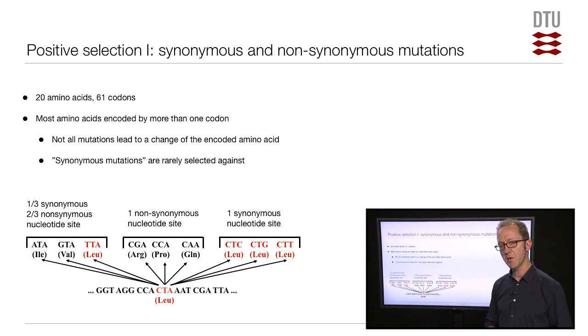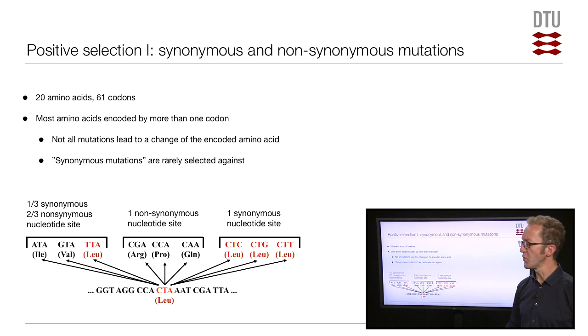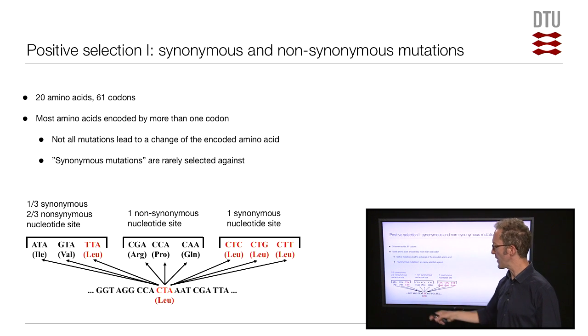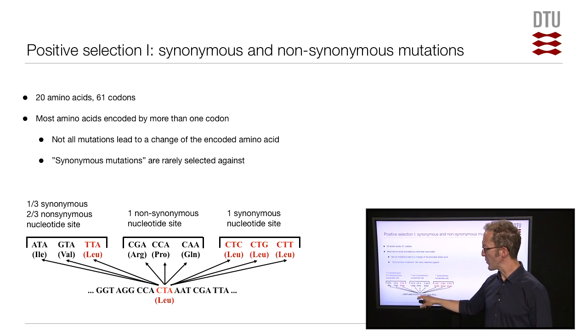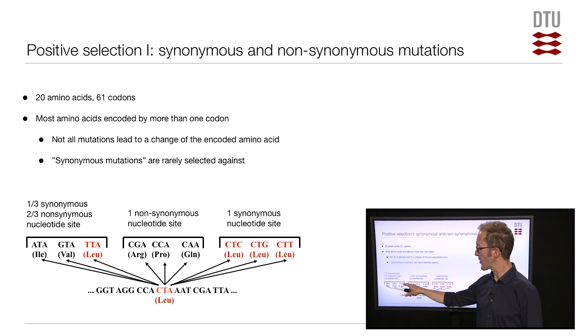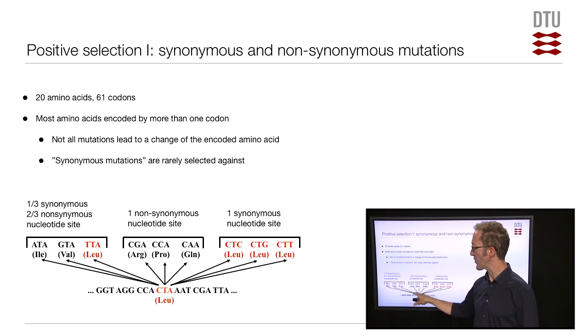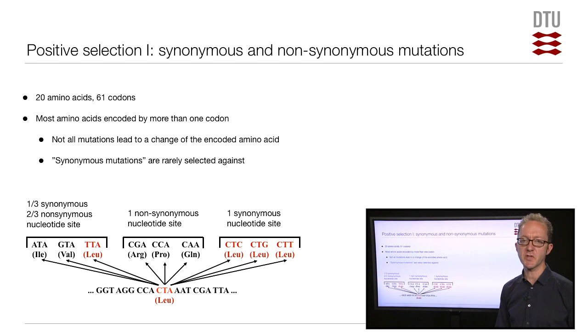Finally, the first position, the C, that can mutate to an A, a G, or a T. It turns out that TTA also encodes leucine, but the other two codons do not. This is because leucine is one of those amino acids that have six different codons that encode it. We therefore refer to the first site here as being one-third synonymous. If you mutate to a T, you will get no amino acid change. And two-thirds non-synonymous. The other two mutations will change the amino acid.